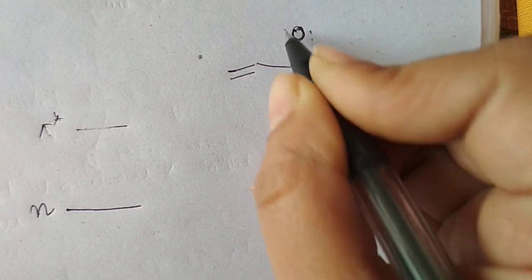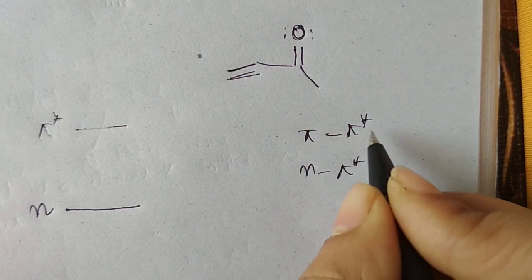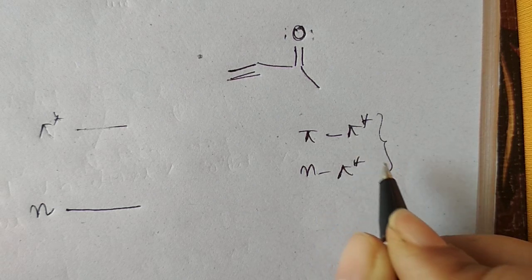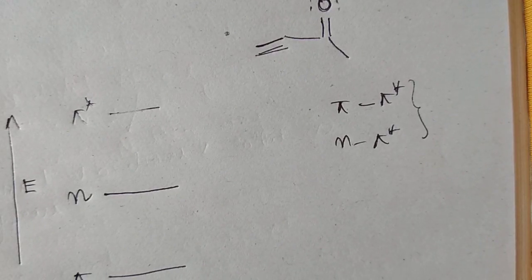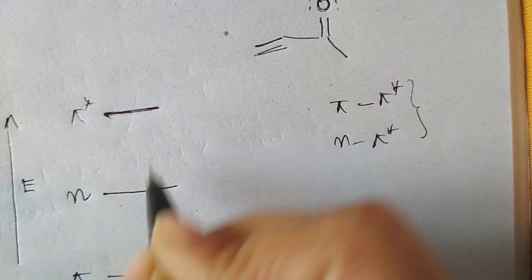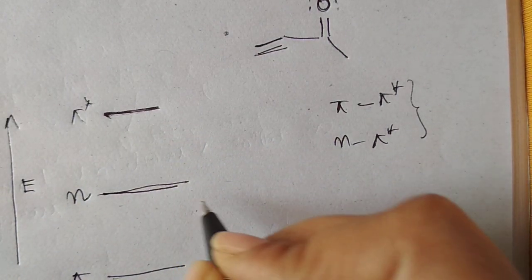The oxygen has non-bonding electrons and pi electrons, so we have these two types of probable transitions. When we use a polar solvent, the pi star, n, and pi orbitals get stabilized.